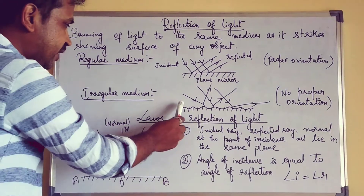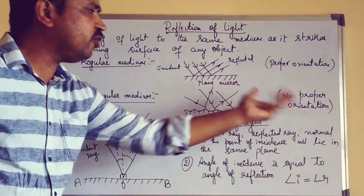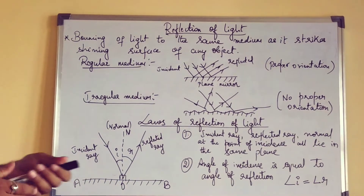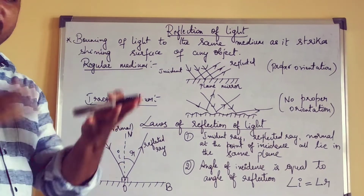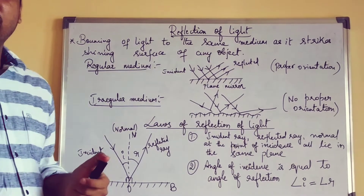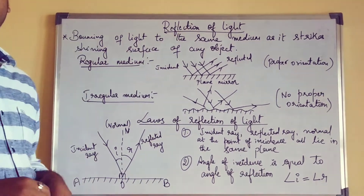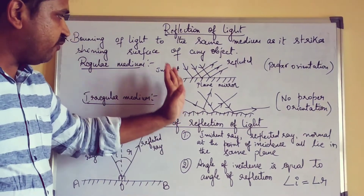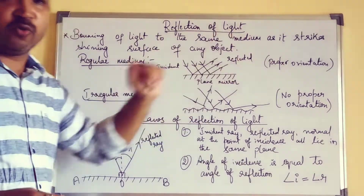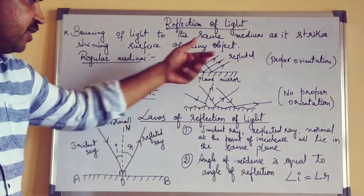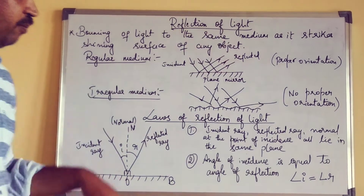Next comes the irregular medium. As you can see in the diagram, the surface is irregular. Whenever you have an irregular surface, you will have improper orientation — there is no proper orientation. Just for an example: if the road is very smooth without any potholes or road breakers, vehicles will go smoothly. If there are potholes or road breakers, every now and then we need to apply the brakes and we travel very episodically. That is an example for the irregular medium, where there is no proper orientation.